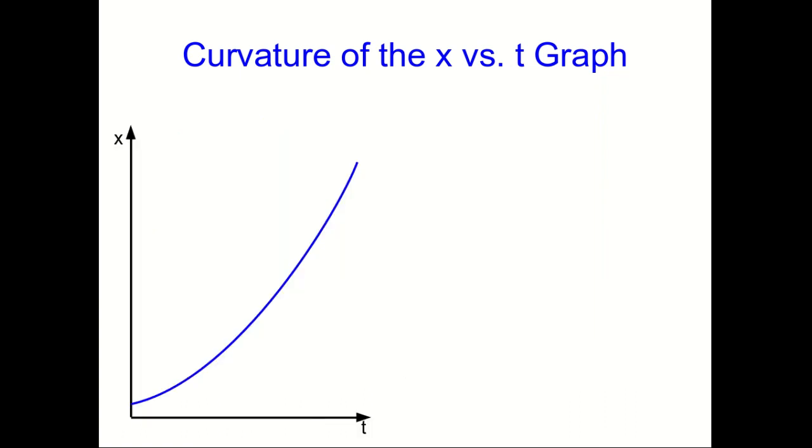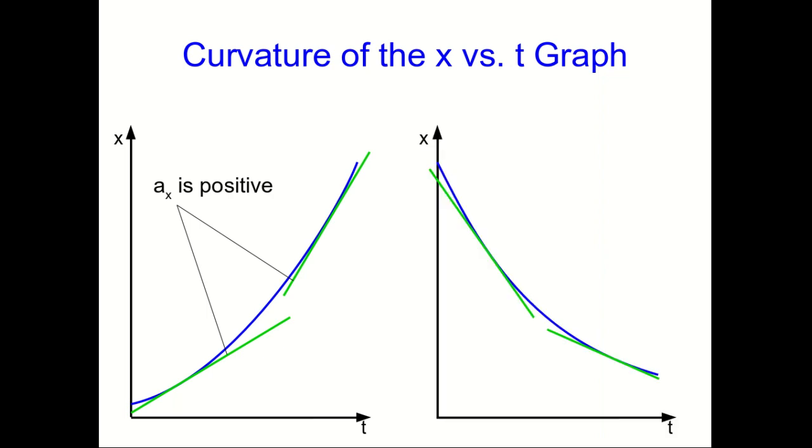Well, we can flip that around and think about a graph with this shape. Now, if you draw a few tangent lines to it, you can see that it's getting steeper with time. Or in other words, vx is increasing. And that tells us that ax is positive. Similarly, this one. I've already drawn two tangent lines to it. And you can see they're negative and they're getting less steep. Well, that means vx is increasing because it's getting less negative. And so again, ax is positive here. And so look at both of these graphs and you see they are both curving upward. So if the x versus t curves upward, or you would say it's concave up, then ax is positive.